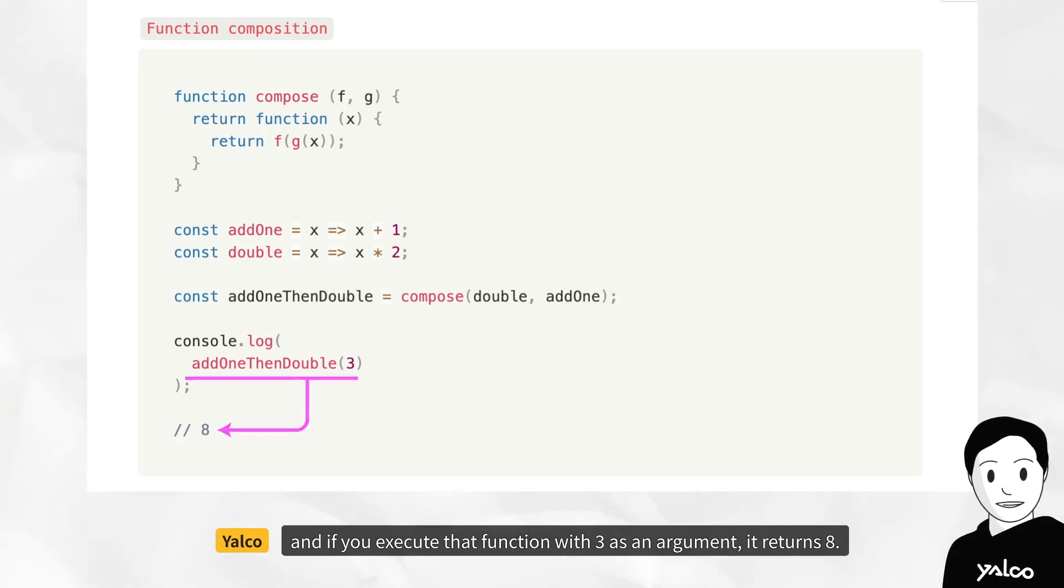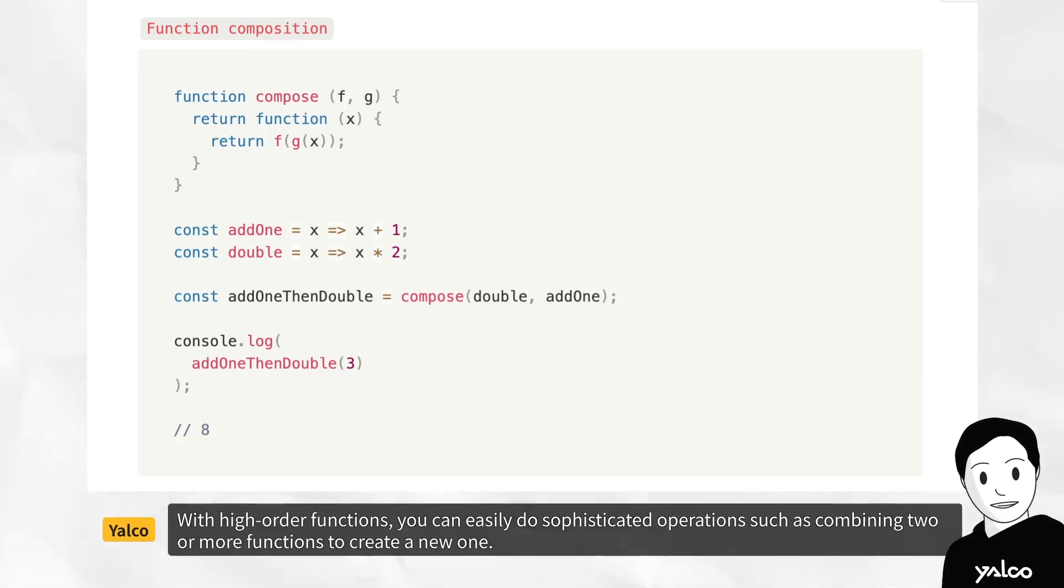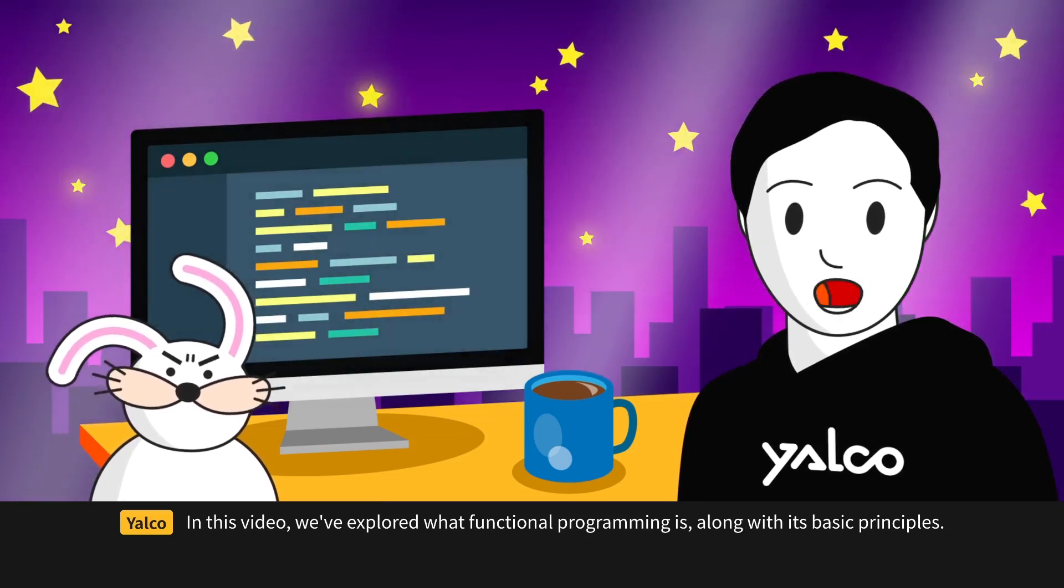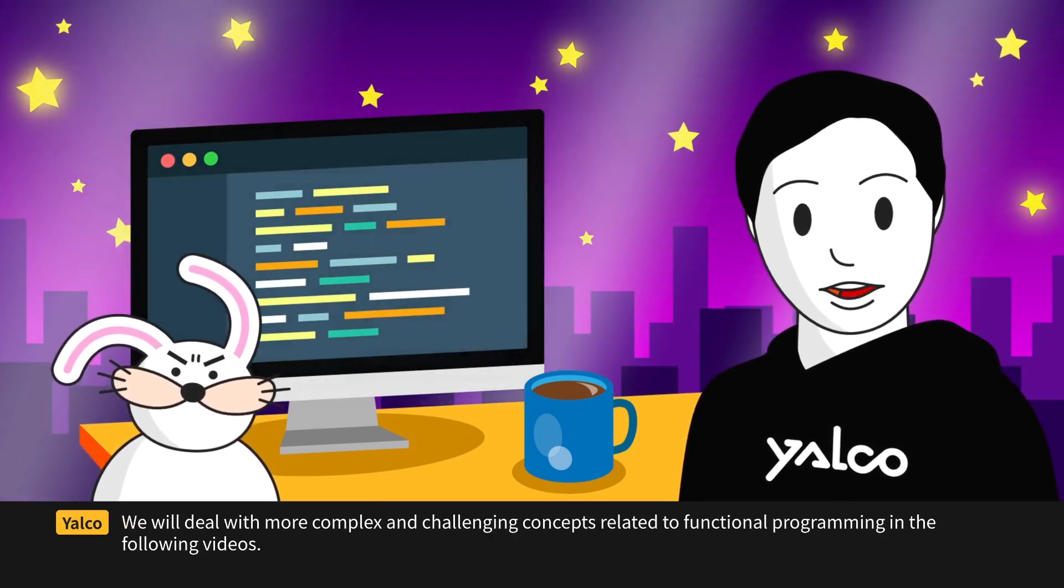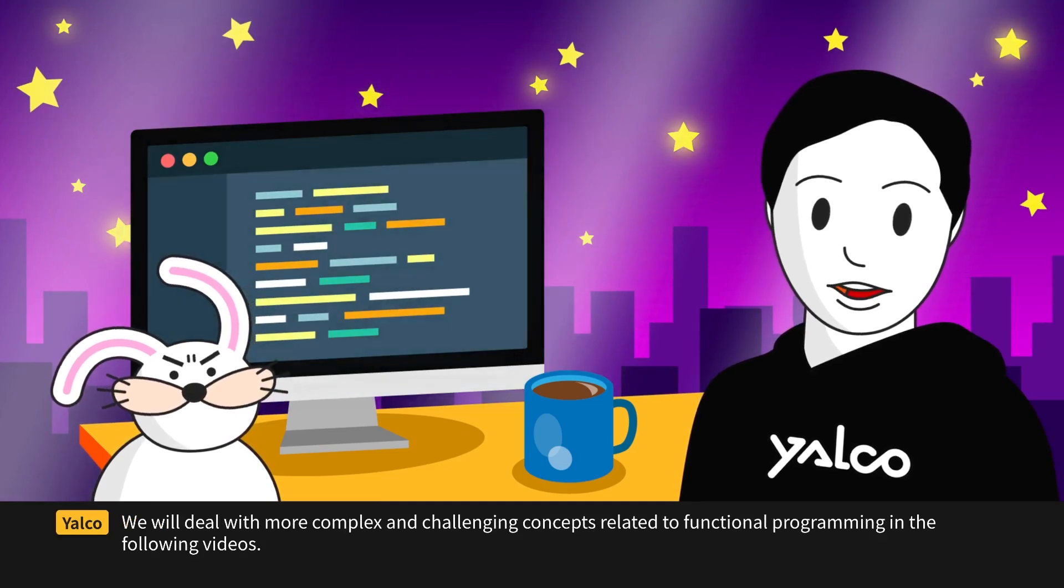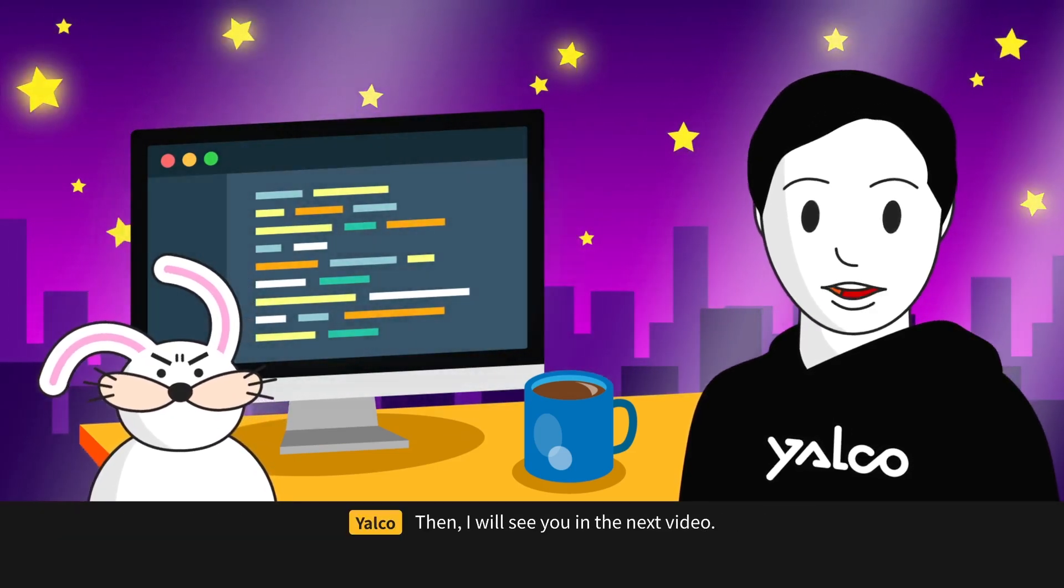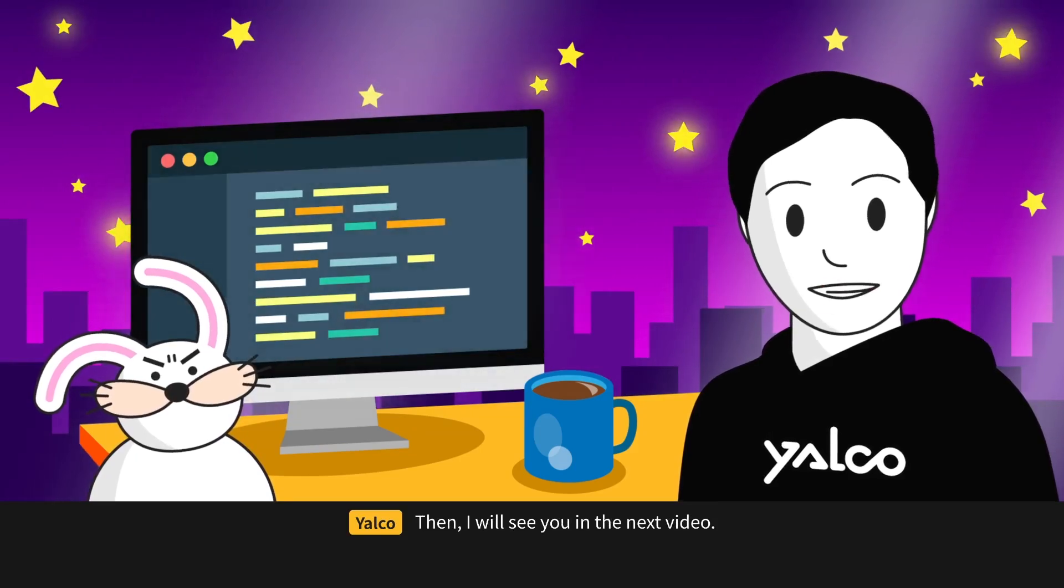And if you execute that function with 3 as an argument, it returns 8. With higher-order functions, you can easily do sophisticated operations such as combining two or more functions to create a new one. In this video, we've explored what functional programming is, along with its basic principles. We will deal with more complex and challenging concepts related to functional programming in the following videos. Then, I will see you in the next video.